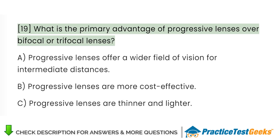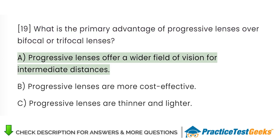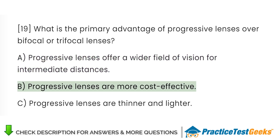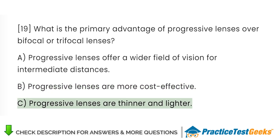What is the primary advantage of progressive lenses over bifocal or trifocal lenses? A. Progressive lenses offer a wider field of vision for intermediate distances. B. Progressive lenses are more cost-effective. C. Progressive lenses are thinner and lighter.